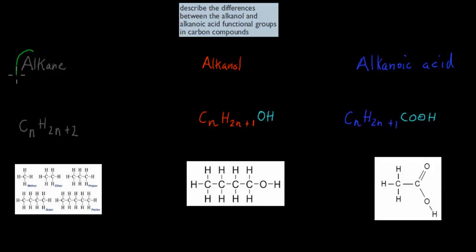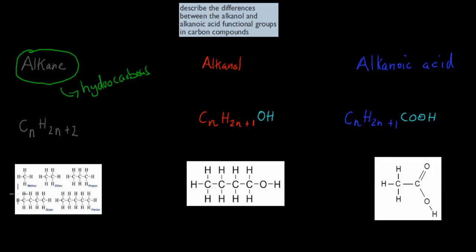Alkanes are pure hydrocarbons, meaning within that chain we only have carbon and hydrogen. These are all your different types of alkanes, and you can see it's only carbon and hydrogen. The formula for alkanes is CnH2n+2, which means for every carbon we have 2 hydrogens, plus 2 at the end as well.